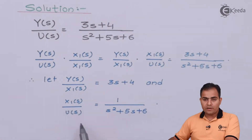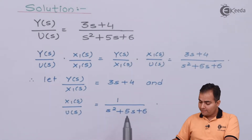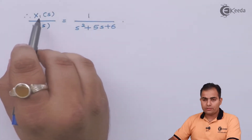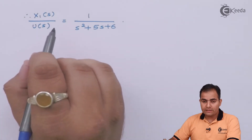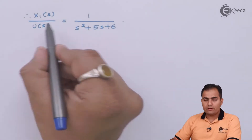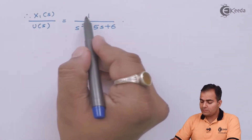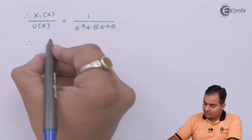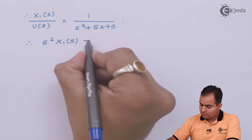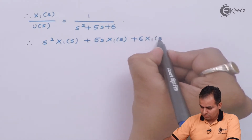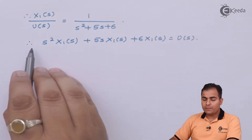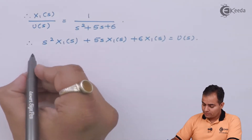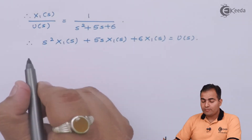We solve the input part first because the state variables obtained here will also be used in the output equation. For x1(s)/U(s) = 1/(s² + 5s + 6), we cross-multiply: x1(s) multiplied by the whole denominator equals U(s). Multiplying x1(s) through each term of the denominator and then applying the inverse Laplace transform gives the differential equation in the time domain.